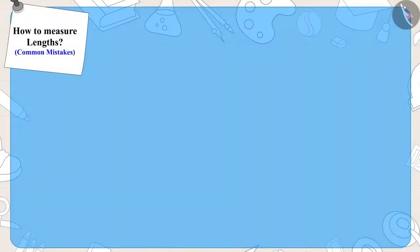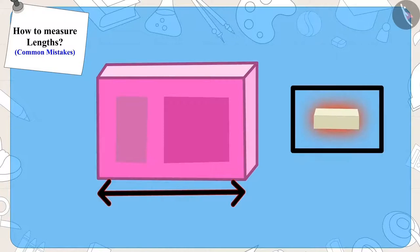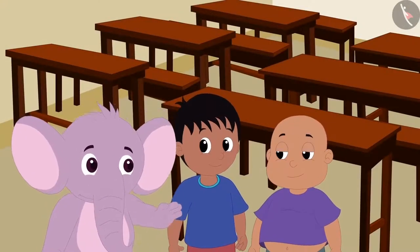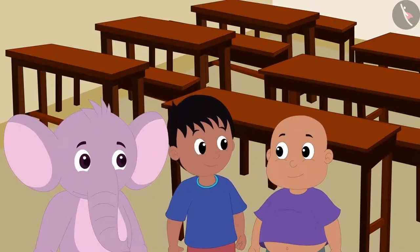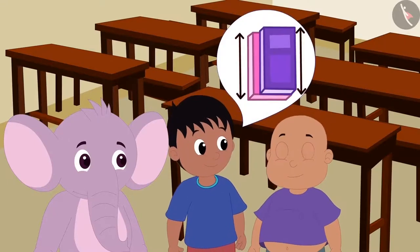Children, remember, whenever we measure the length of an object with the help of another object, then we should measure the length from one end of the object to the other end. Appu made Raju and Bablu understand this. Now Raju told Bablu that maybe their notebooks might be of the same length.